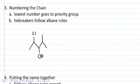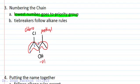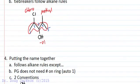For numbering the chain, the lowest number must go to the priority group. With this example, no matter which way I number, I'm going to put a 3 on that alcohol — so 1, 2, 3, no matter which way. Then I revert to the old tie breakers. Since I get a 3 either way, the next tie breaker is the next number. I can put a 2 on each either way, so then I revert to alphabet — chloro before methyl. That's a look back at our tie breakers for alkanes.